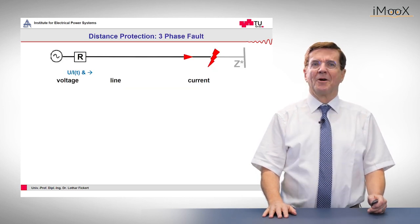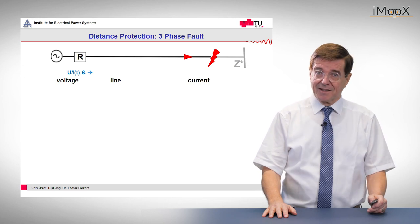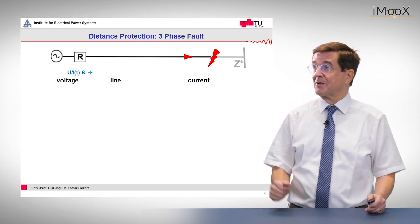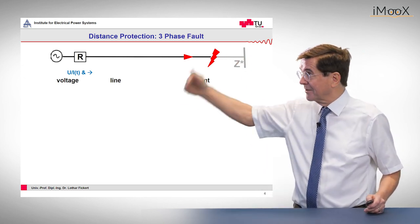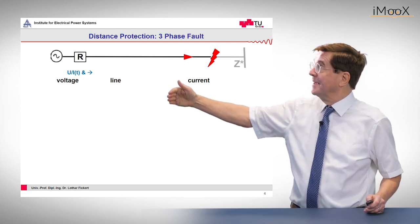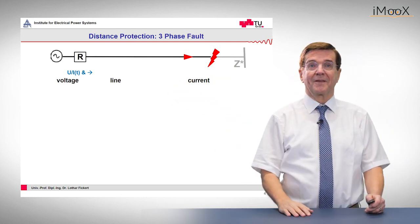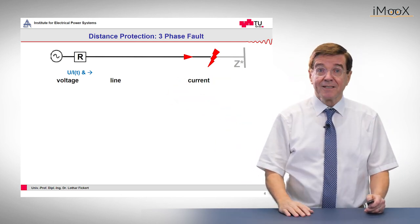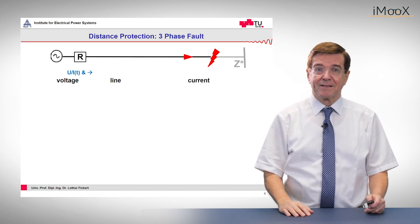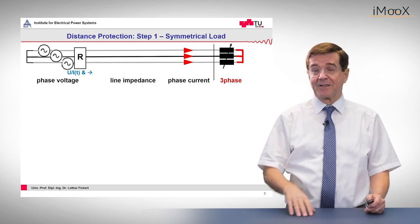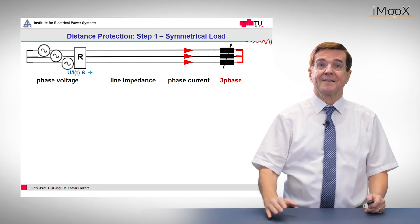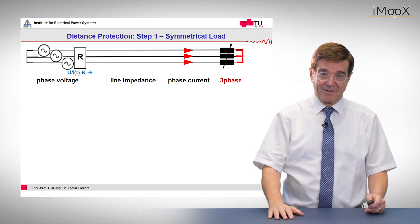What is the purpose of a distance relay? The purpose is to determine the distance between the location of the relay and the fault point. And for this we need the so-called line impedance, from which we can easily determine where the fault is geographically.